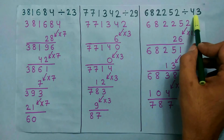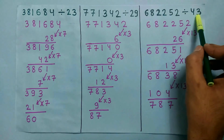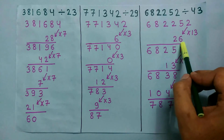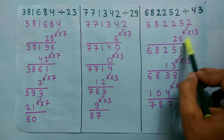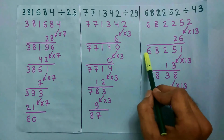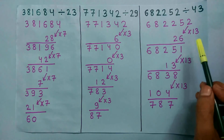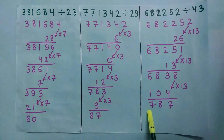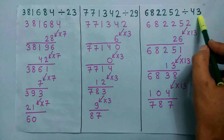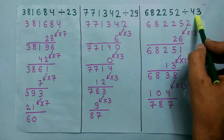Now we take an example for 43. To check if this number is divisible by 43 or not, multiply the last digit by 13 and we get 26. Now add this 26 to the remaining number and we get this number. We repeat this process until we get a small number. In this case the small number is 787, and 787 is not divisible by 43, so this number is also not divisible by 43.